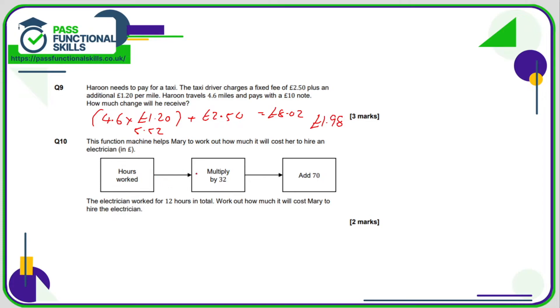Question number 10. So all we need to do is put into this machine the number of hours worked, which is 12. So then we're going to multiply that by 32. And once you've worked out 12 times 32, we're just going to add 70 to it. 12 times 32 comes to £384 and £384 plus 70 comes to a grand total of £454.